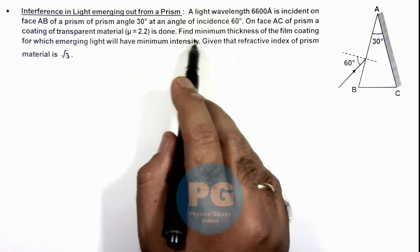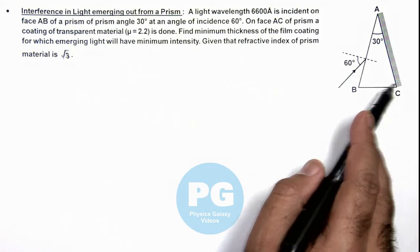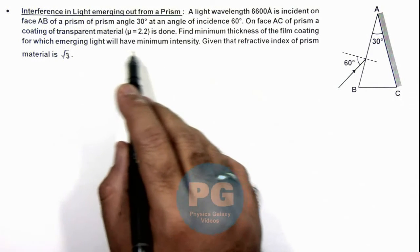We are required to find the minimum thickness of this film coating for which emerging light will have minimum intensity.